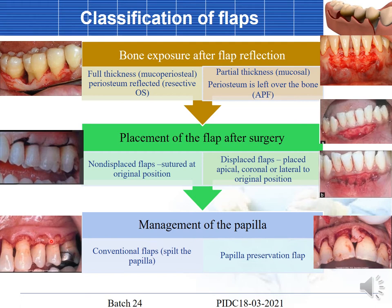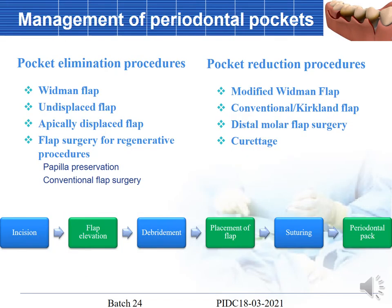Based on management of the papilla, flaps are classified into the conventional flap — where the flap is split right at the center of the papilla, dividing the papilla on the buccal and lingual sides — and the papilla preservation flap, where the papilla is preserved and reflected to one side.